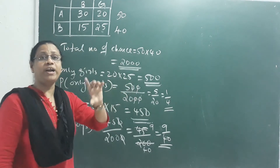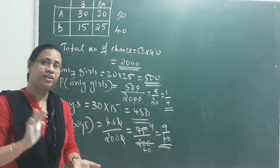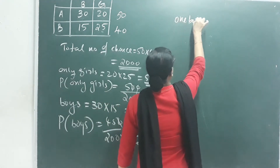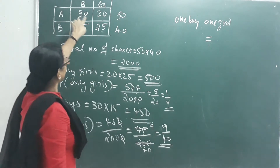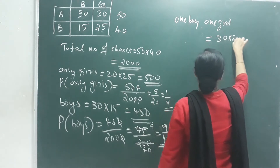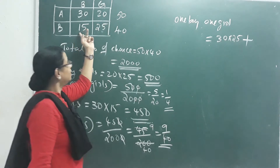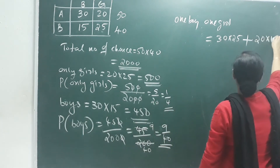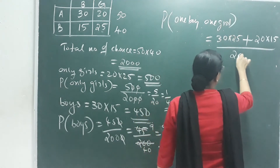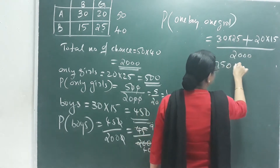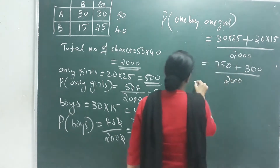Next question: one boy and one girl. You can select one boy from one class and one girl from the other, or vice versa. That gives 30 into 25 plus 20 into 15, which is 750 plus 300, equal to 1050 by 2000.